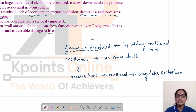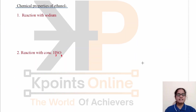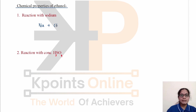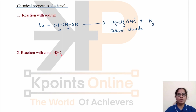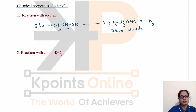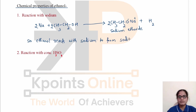So we have learned the harmful effects of alcohol consumption, and it is never recommended to have alcohol. Now let's discuss the chemical properties of ethanol. First is its reaction with sodium. When ethanol reacts with sodium, it forms sodium ethoxide and hydrogen gas is liberated. The Na forms a bond where the H was removed. Ethanol reacts with sodium to form sodium ethoxide with brisk effervescence of hydrogen gas.